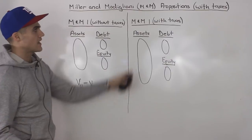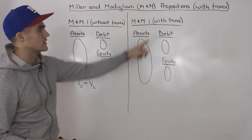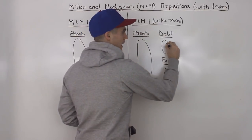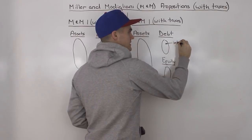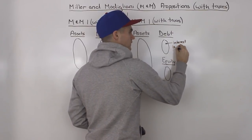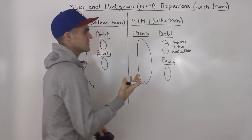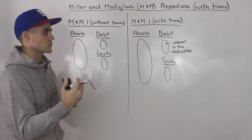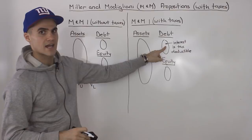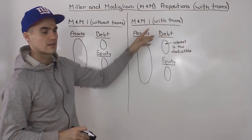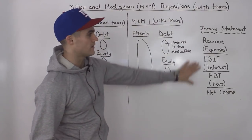When you start incorporating taxes, M&M Proposition 1 is actually going to change. The main difference when taxes are involved is that the interest payments that the firm is making on its debt are tax deductible, and that's going to be the reason why the value of firms is going to differ. They're not going to be constant anymore like they were without taxes. You can actually see how interest is deducted on an income statement.